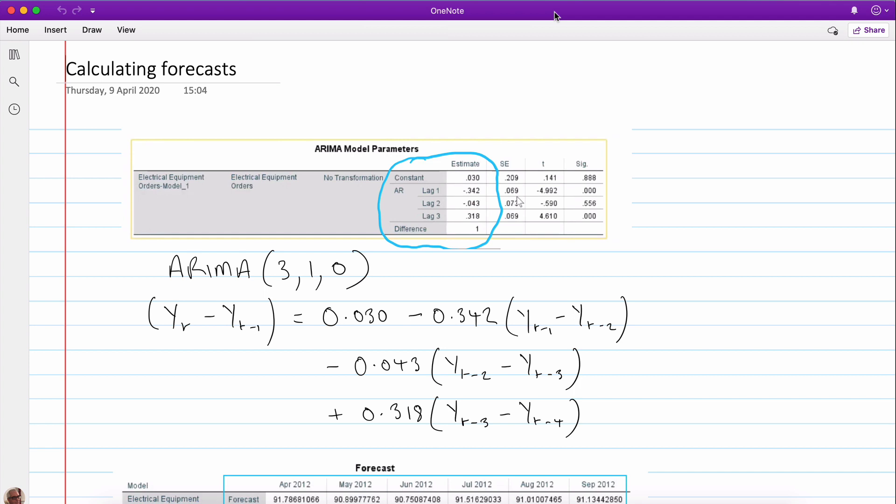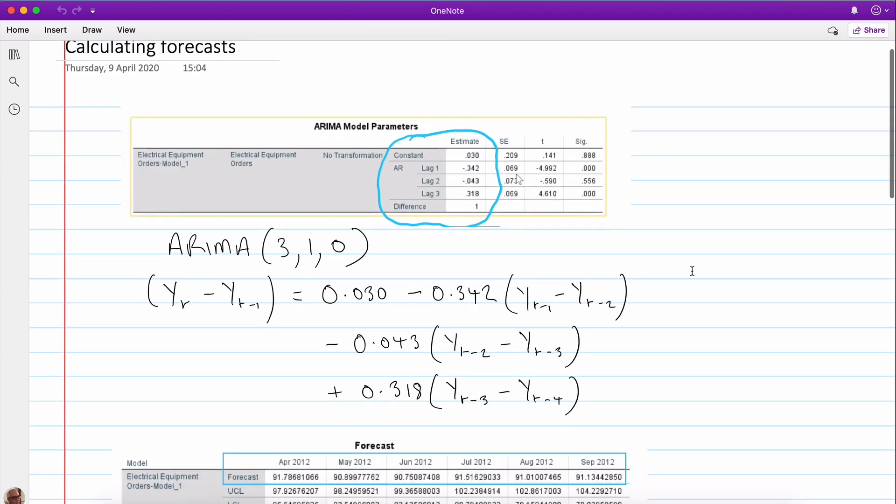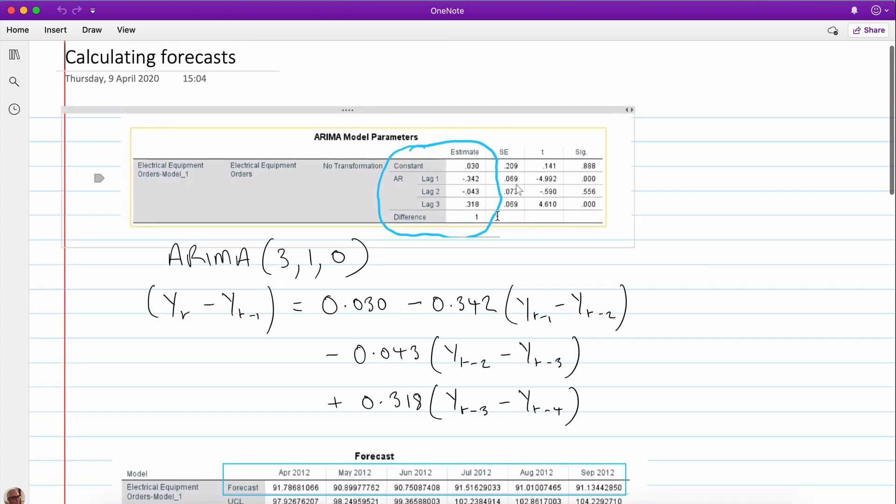So here's the ARIMA(3,1,0) model that I estimated in the video on using SPSS for ARIMA modeling. Here were the estimated coefficients here.